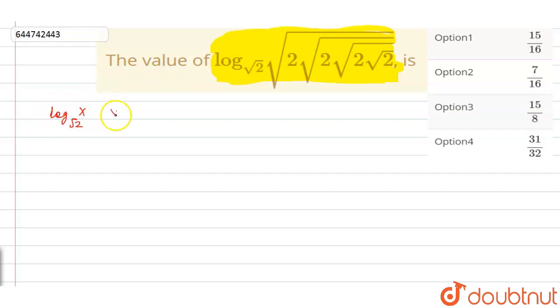then we can say that value of x is equal to under root of 2 and this is under root of 2, under root 2 and under root 2. Now we can evaluate the value of x easily.